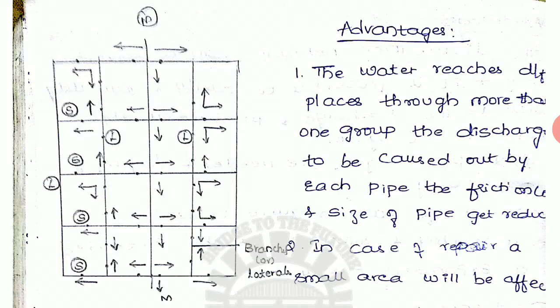It is also called interconnected or interlink or reticulation system. Here, there is an arrangement of pipelines as mains, sub-mains and branches that are all interconnected with each other. This system is well suited for well-planned towns and cities.